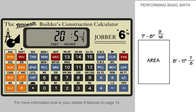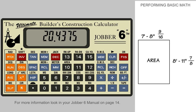The display shows 20 feet, 5 and a quarter inches. To convert this to a decimal value, press the decimal key. The area of our rectangle is 20.4375 square feet.